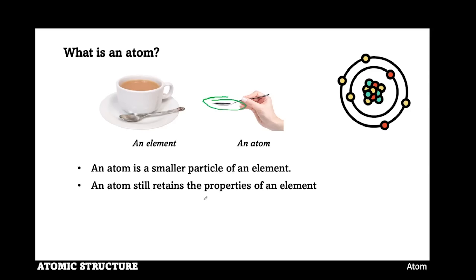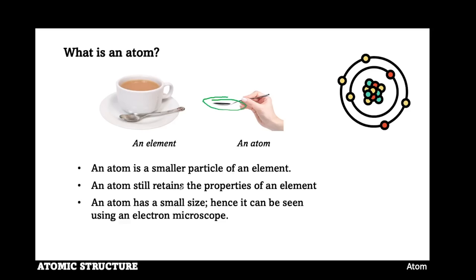Because of the smaller size of an atom, it can be seen using what is called an electron microscope. The electron microscope provides magnification of an atom so that the whole structure and the particles within it can be identified.